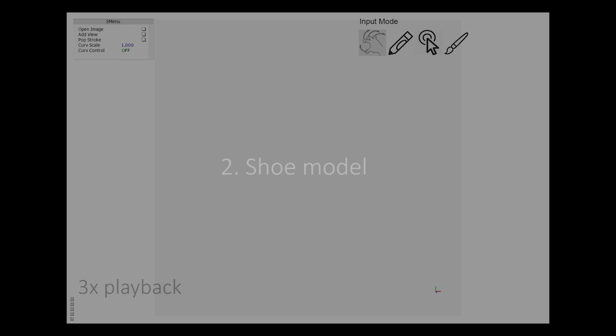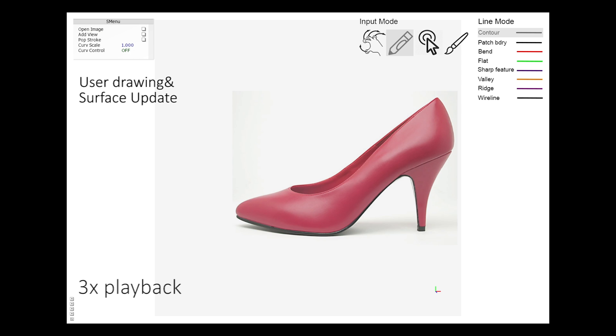Second is a more complicated shoe model. We load the reference image and draw the contour lines, and the 2D domain is built.